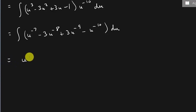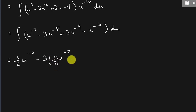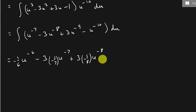Applying the power rule to each term: that's u to the negative 6 over negative 6, minus 3u to the negative 7 times negative 1/7, plus 3u to the negative 8 times negative 1/8, minus u to the negative 9 times negative 1/9, plus C.